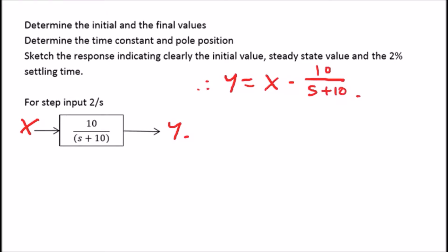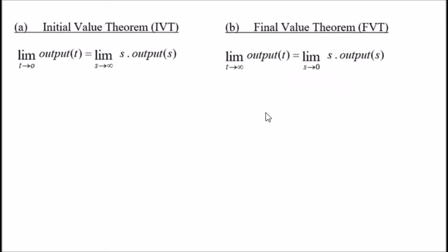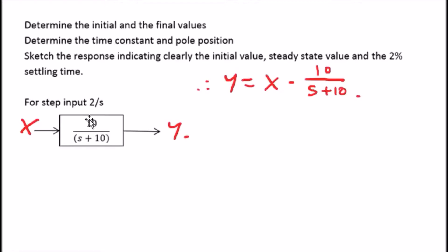Now on the next slide, this tells you how to cover the first problem - the initial value theorem and the final value theorem. It tells us the limit of the original differential equation set to zero would equal the limit of the Laplace version where s is set to infinity. We've got s times output function, so we're going to take the limit as s goes to infinity where x represents the step input 2 over s.